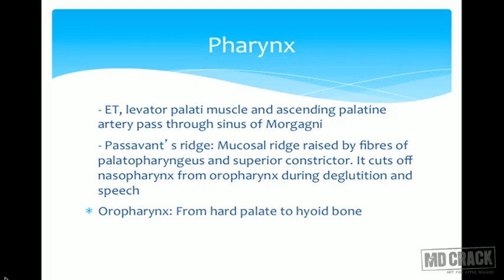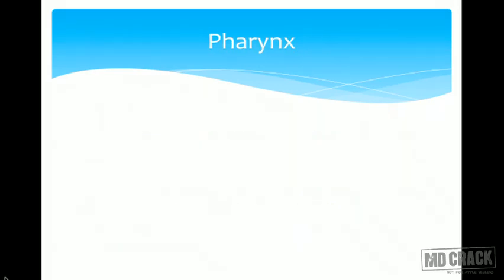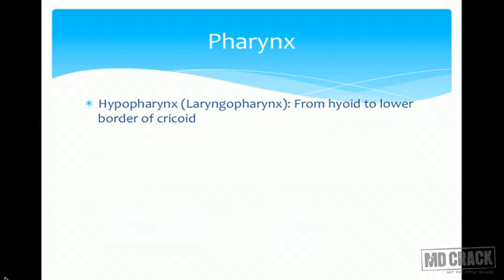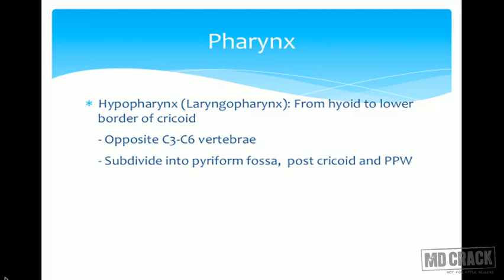The oropharynx extends from the hard palate up to the hyoid bone, opposite C2 and C3 vertebrae. The hypopharynx or laryngopharynx extends from the hyoid bone to the lower border of the cricoid, opposite C3 to C6. The laryngopharynx is subdivided into three subsites: pyriform fossa, post-cricoid region, and posterior pharyngeal wall.